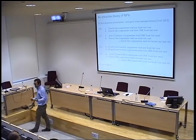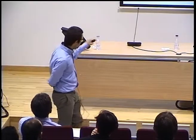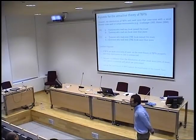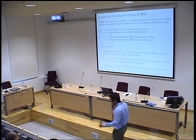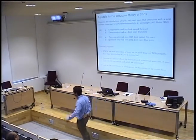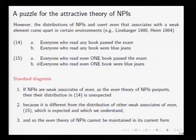So we get a lot of mileage, and we should be happy at this point. But whenever you see 'so far so good', you know something's going to change pretty soon. And it changes when we look at a slightly greater variety of downward entailing or downward entailing-like environments, where we see a discrepancy between the distribution of NPIs on the one hand and distribution of 'even one' expressions on the other.